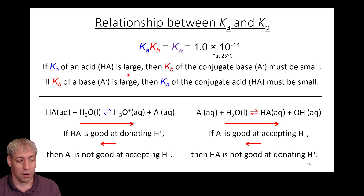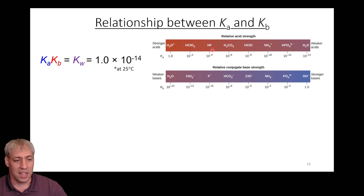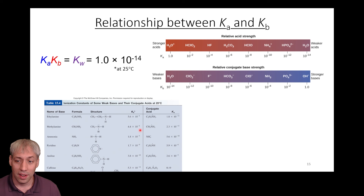It's critical to note this math only works for a conjugate acid-base pair. You can't take any random Ka and Kb and set them equal to Kw — it's only the relationship between an acid and its own conjugate base. For real acids: HF has a Ka of ~10⁻⁴, which means F- has a Kb of ~10⁻¹⁰. Multiply any conjugate pair's Ka and Kb together and you get 1 × 10⁻¹⁴. The table shows that knowing the acid tells you about the conjugate base and vice versa.